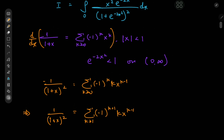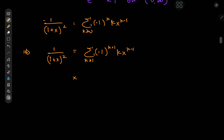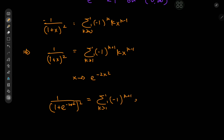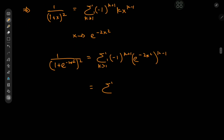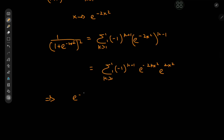But of course we don't just have x — we actually have e to the negative 2x squared. So all we need is a transformation x to e to the negative 2x squared. So we get 1 by 1 plus e to the negative 2x squared, whole thing squared, equal to the sum over the positive integers k of negative 1 to the k plus 1 times e to the negative 2x squared all to the k minus 1. This would give us the sum over k of negative 1 to the k plus 1 times e to the negative 2kx squared times e to the positive 2x squared. And we can expand by the multiplicative inverse of e to the 2x squared.